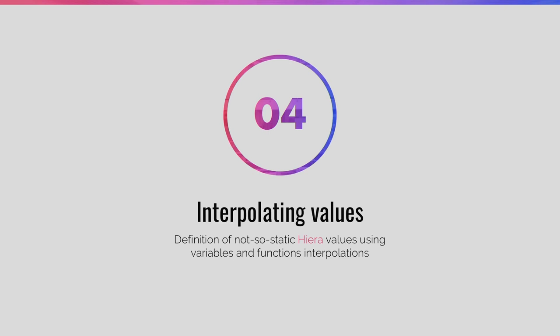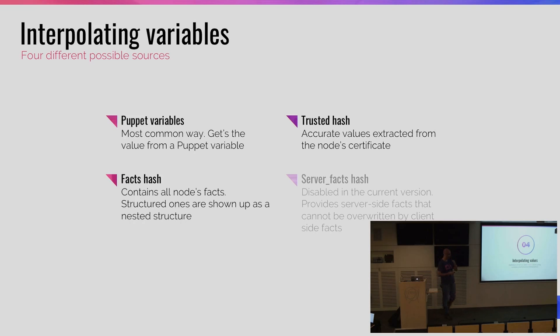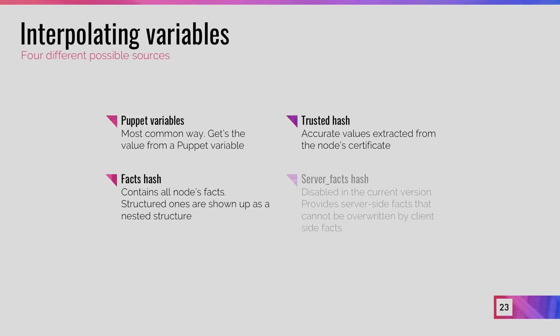Until now we've been defining static values — arrays and strings. But there is another thing we can use: interpolation of values. Interpolation can come in two ways. The first is interpolation of variables, with four different sources. The simplest, which you may already be using, is interpolation of Puppet variables: you define a Puppet variable in a manifest, and in Hiera you create a new key whose value references that Puppet variable.